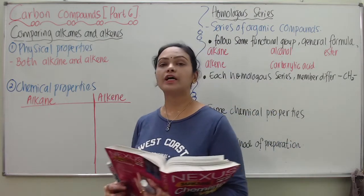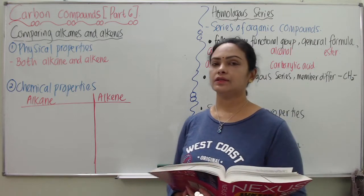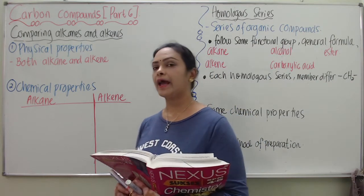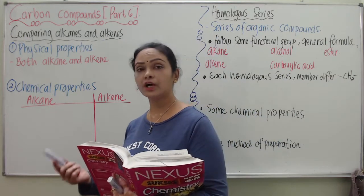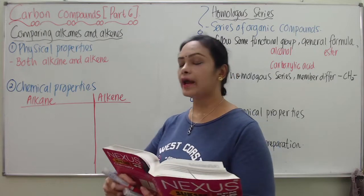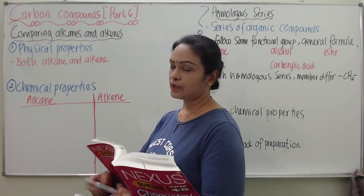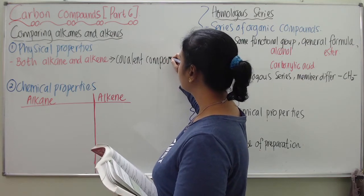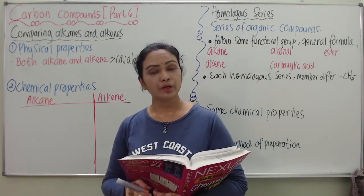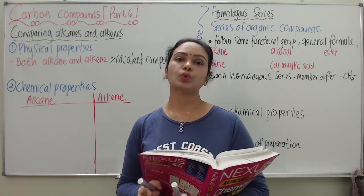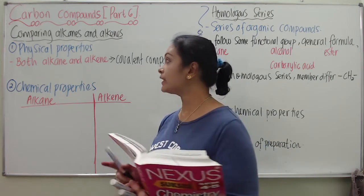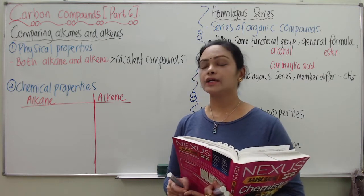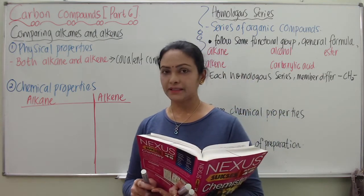When we look at physical properties of alkane and alkenes, alkane and alkenes are covalent compounds. Students must bear in mind that alkane and alkenes are covalent compounds — that is the first thing that must come to your mind. Covalent compounds namely alkane and alkenes do not dissolve in water but dissolve in organic compounds. Secondly, alkane and alkenes cannot conduct electricity in any state.